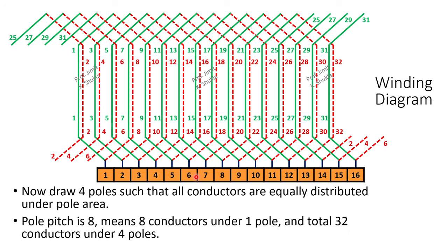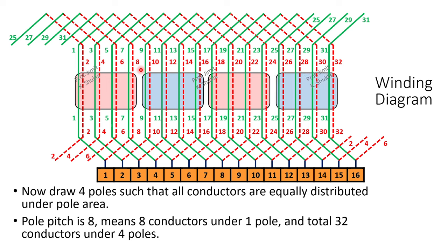Now we will draw 4 poles such that all conductors are equally distributed under each pole area. As pole pitch is 8, that means 8 conductors are under 1 pole. So the first pole will have conductors 1, 2, 3, 4, 5, 6, 7, 8, and so on. We will be drawing consecutive north and south poles. So these are our 4 poles of the machine.